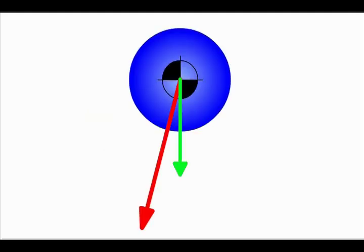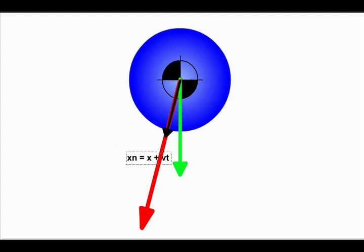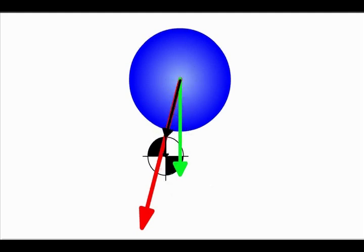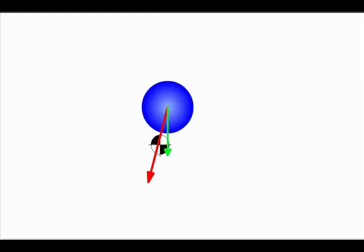These forces are then used to predict the particle's future location and velocity for some small time increment called a time step. For the purposes of this presentation, the apparent time step and vector lengths have been exaggerated for visual purposes. Normally, the time step is on the order of millionths of a second.